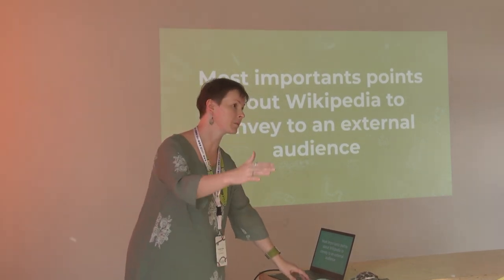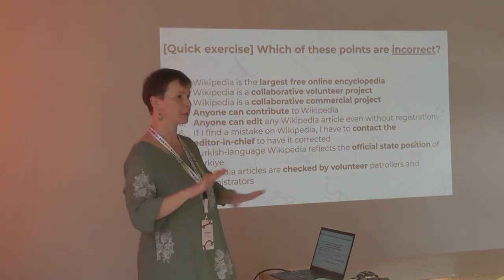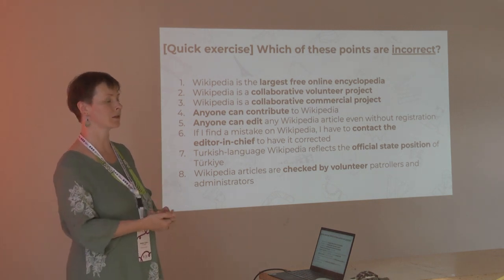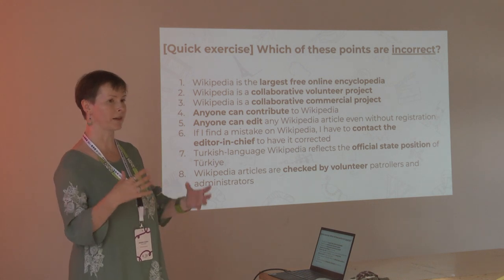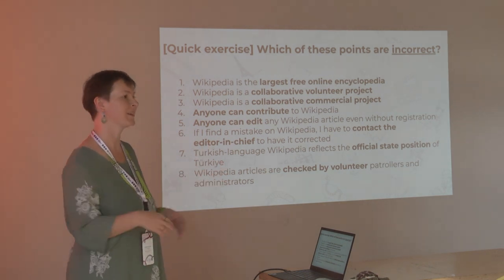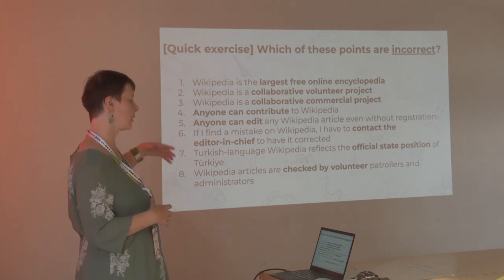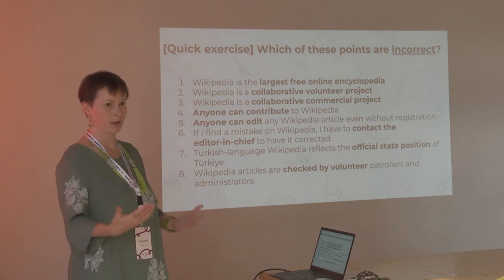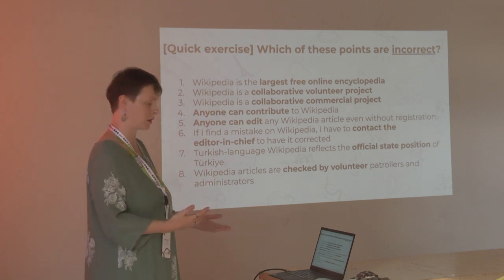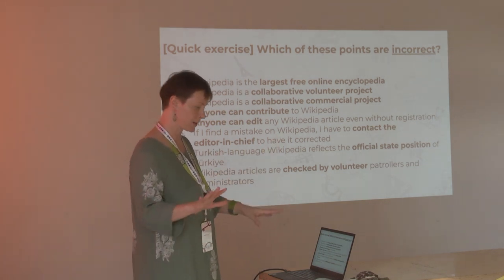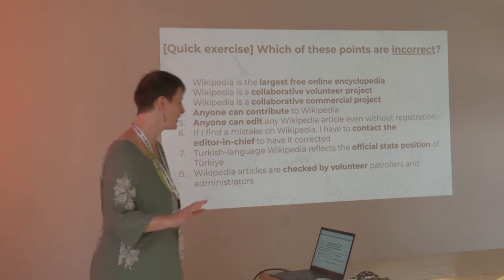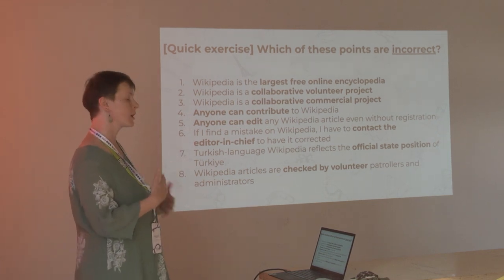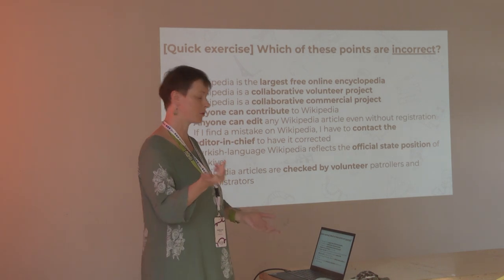Two things: we are thinking about an external audience — people who don't already know about Wikipedia. If you are talking to an external audience, you might want to start with something that helps you understand their vision of Wikipedia. It can start with a quick exercise about which points they believe are incorrect or correct, because that would help you figure out what they know and how you can address it. It helps to check, for instance, whether they think it's a commercial project or a volunteer project. It all helps you understand your audience better when talking to non-Wikipedians.